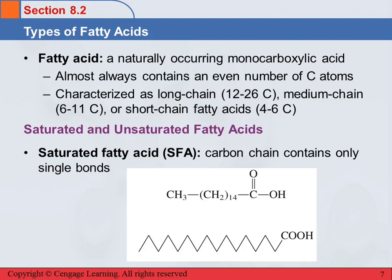First, we need to talk about fatty acids. Fatty acids are naturally occurring — this is biochemistry, biological chemistry we're talking about, so we're pretty much only talking about naturally occurring compounds. These are naturally occurring monocarboxylic acids, and they almost always have an even number of carbon atoms. The reason they have an even number is because of how they're made — we'll look at that when we get to metabolism — but they are made in a way that adds two carbons at a time, so it's very unusual to find an odd number of carbons in the chain.